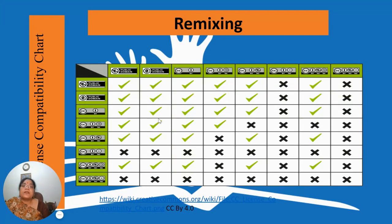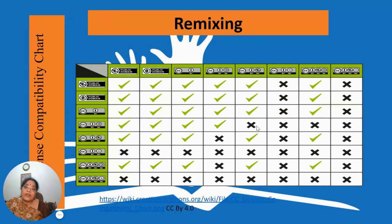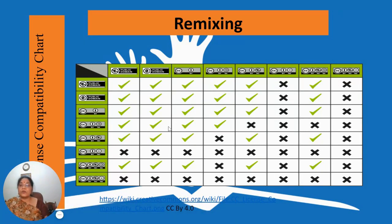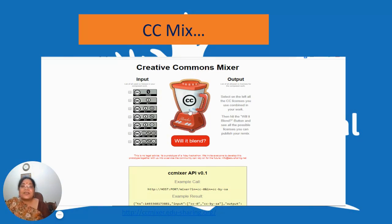CC BY SA can be mixed with Public Domain, CC Zero, CC BY, and CC BY SA — that is, the same license — but it cannot be mixed with CC BY NC, because NC means Non-Commercial whereas SA requires release under the same license. So whenever you are mixing resources, you must check compatibility. If they are not compatible, you cannot remix them, because the resulting work must be released under the same license.